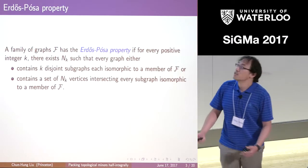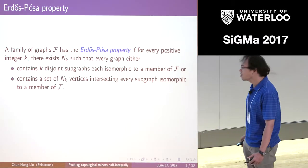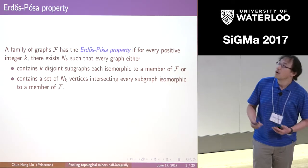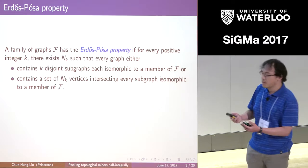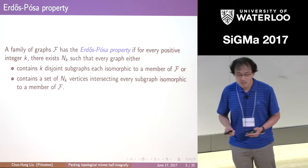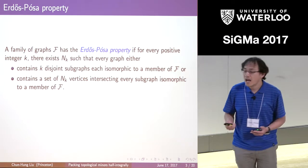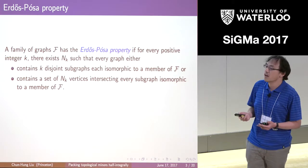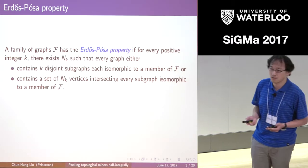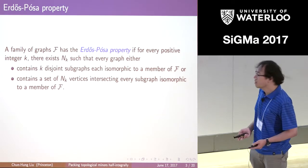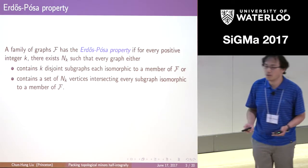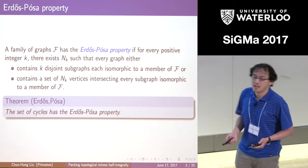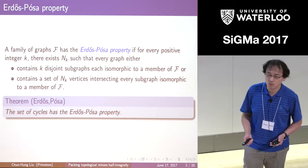We are quite interested in when this situation happens — when the covering value C can be upper bounded by a function of the packing value P. This is exactly described by the Erdős-Pósa property. Formally, we say a family of graphs has the Erdős-Pósa property if for every number k, I can find another n depending on k, such that for every graph G, either I have k disjoint subgraphs each isomorphic to a member of F, or I can find a set of at most n vertices touching all such subgraphs.